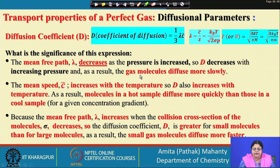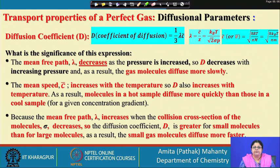So D decreases with increasing pressure, and as a result molecules will diffuse more slowly. If D decreases, molecules diffuse at a slower rate. If pressure is increased, the diffusion parameter decreases and the diffusion process is slowed or retarded.